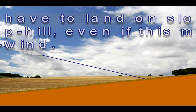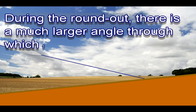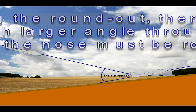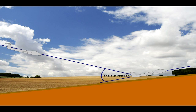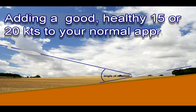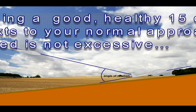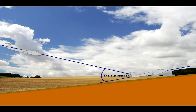An uphill landing will require a substantial increase in your approach speed - much higher than for a landing on a level field. During the round out there is a much larger angle through which the nose must be rotated. Effectively you are attempting to fly uphill until touchdown and that requires a lot of extra energy. As a rough guide you should add around 10 knots for every degree of up slope. Of course slope is not easy to quantify, so adding a good healthy 15 or 20 knots to your normal approach speed is not excessive. You will very quickly burn off this extra energy during round out and subsequent very short ground roll.